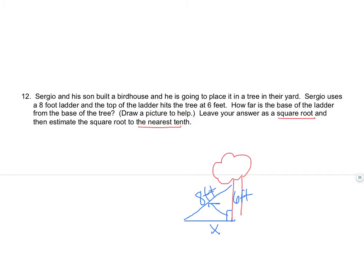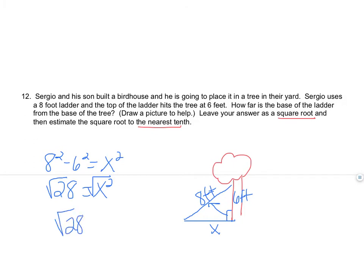Since we're given the hypotenuse and searching for a leg, we subtract using Pythagorean theorem: 8 squared minus 6 squared equals X squared. That gives us 28, so X equals the square root of 28. To estimate to the nearest tenth: the square root of 28 is approximately 5.29, and looking at the 9 in the hundredths place — 5 or more, round up — so we get 5.3 feet.